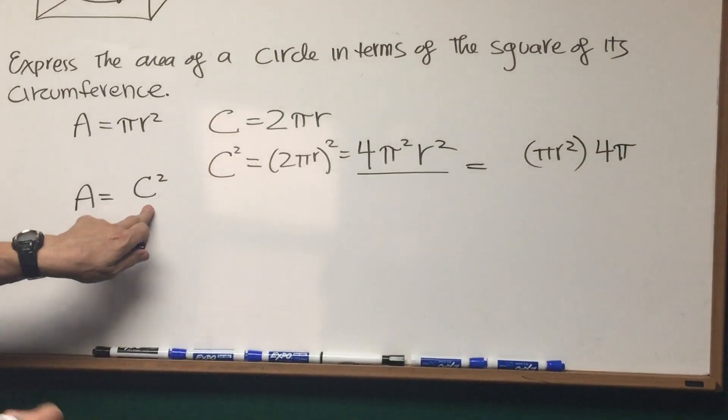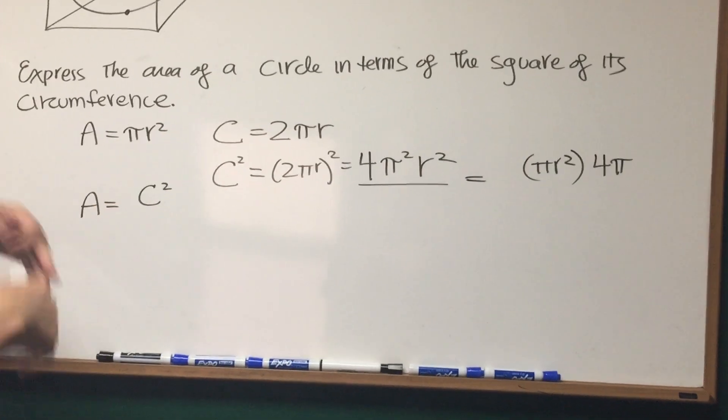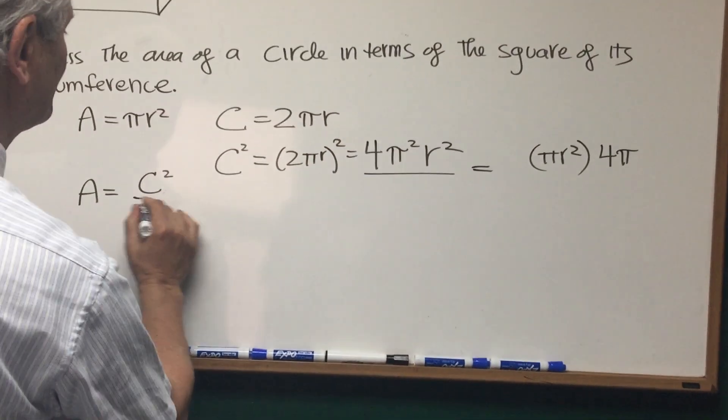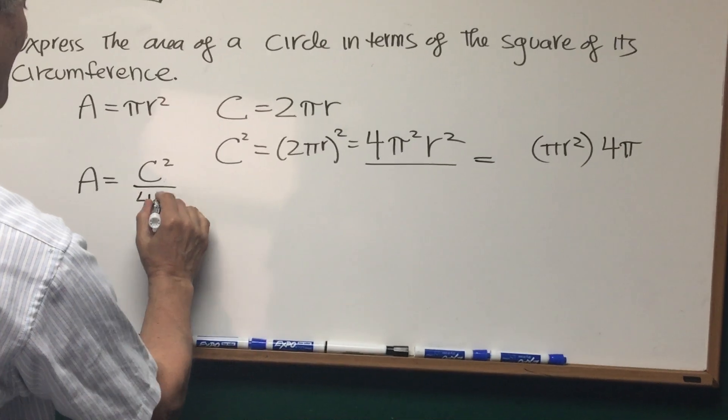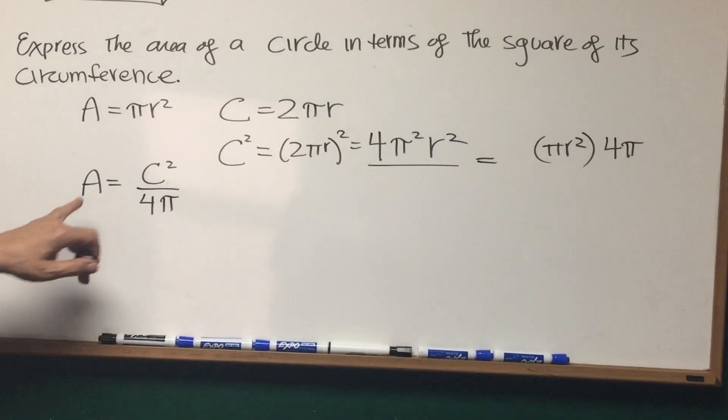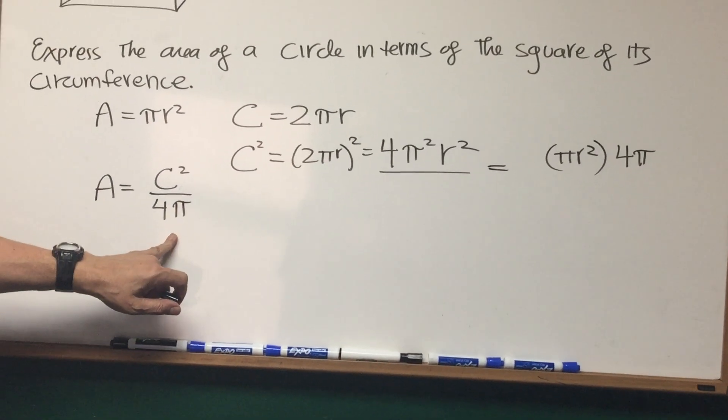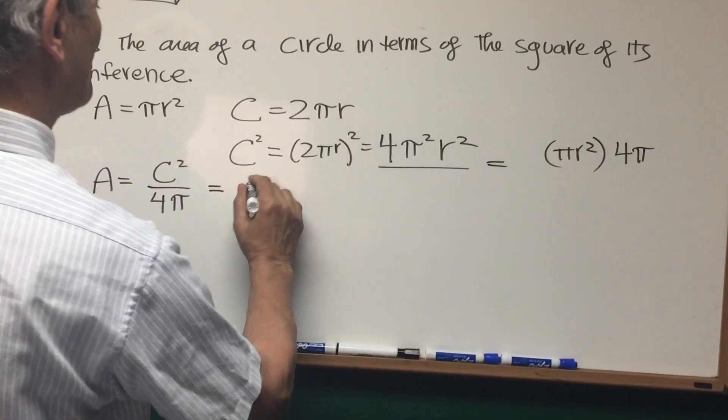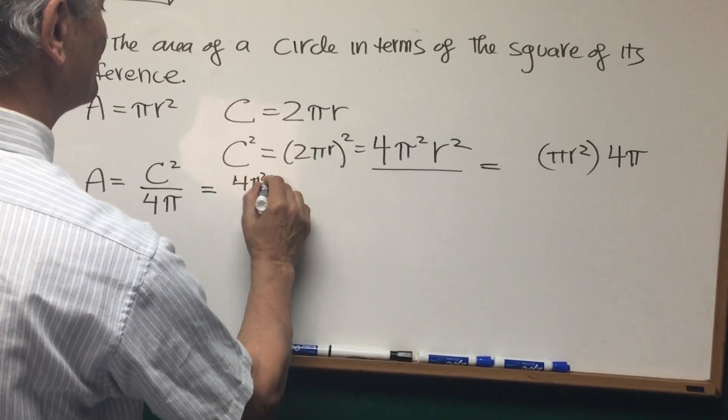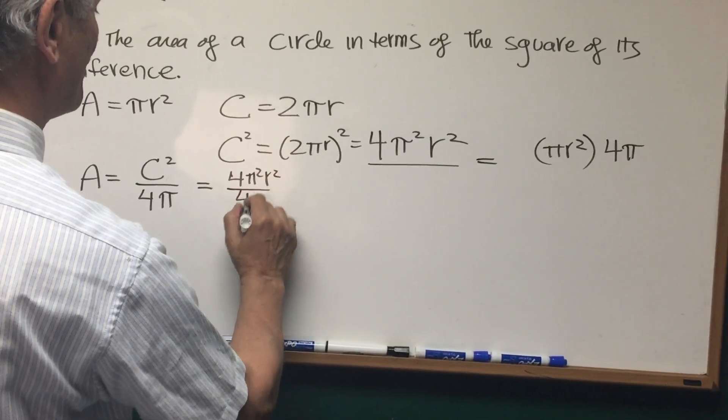Okay, so c squared has a 4 and a pi. That's what we don't want. We want to divide that out. If we divide that by 4 pi, we will have the area expressed in terms of the circumference. And if you don't believe that answer, we can just write this 4 pi squared r squared over 4 pi.